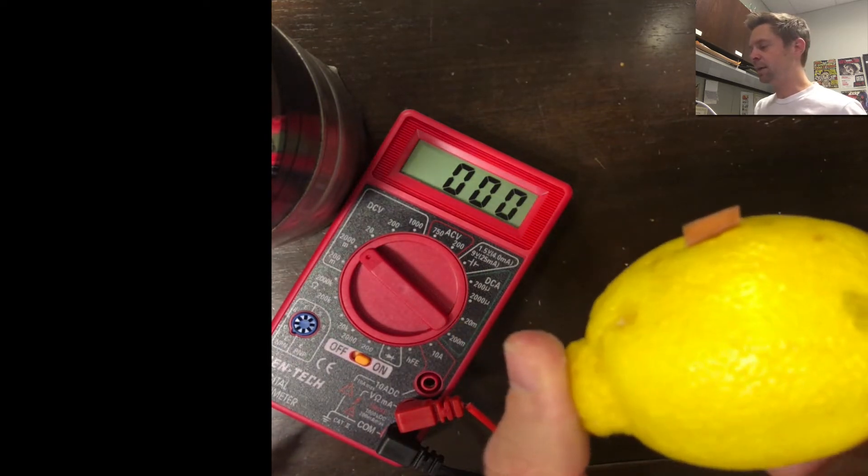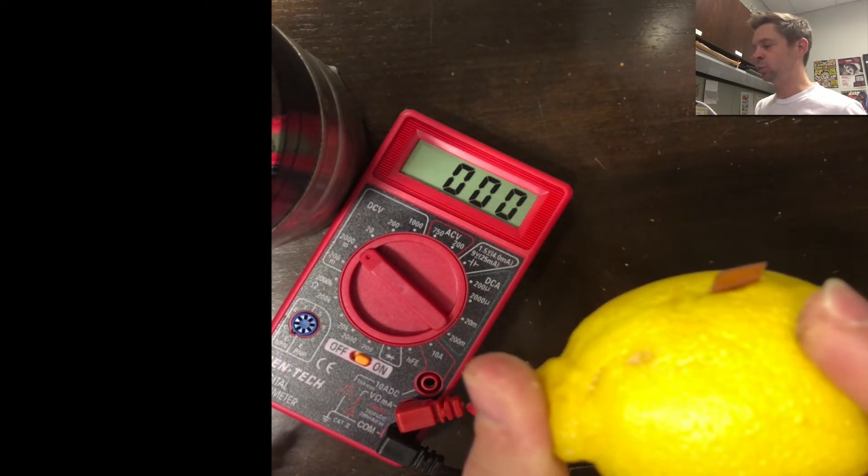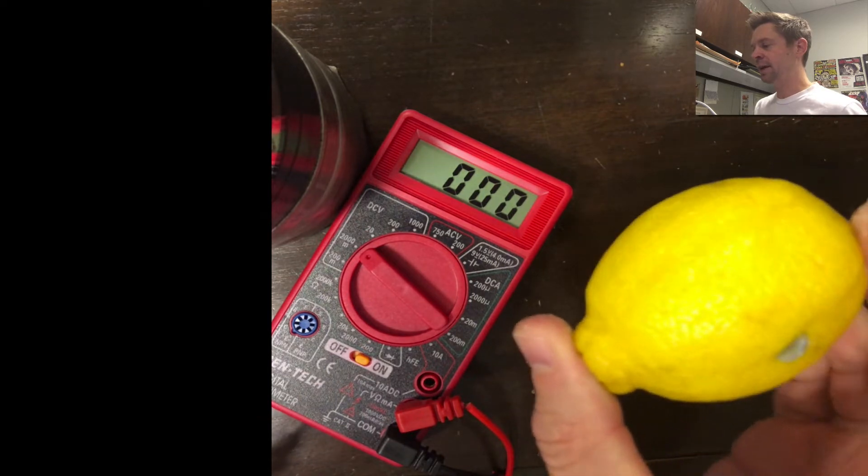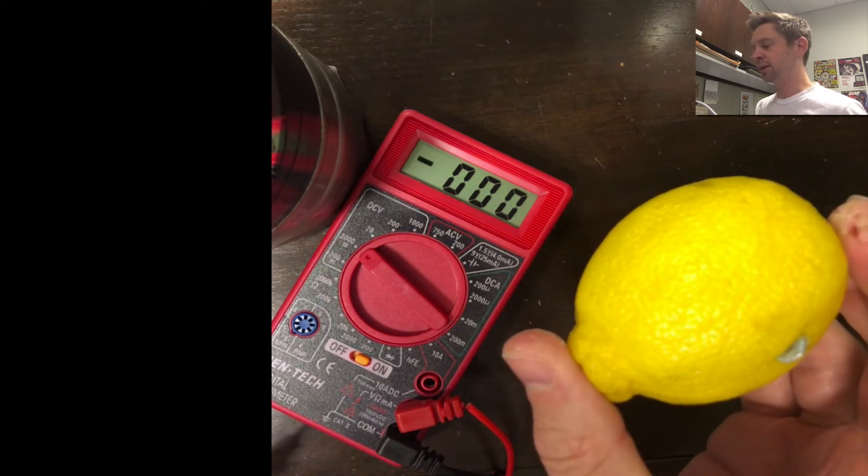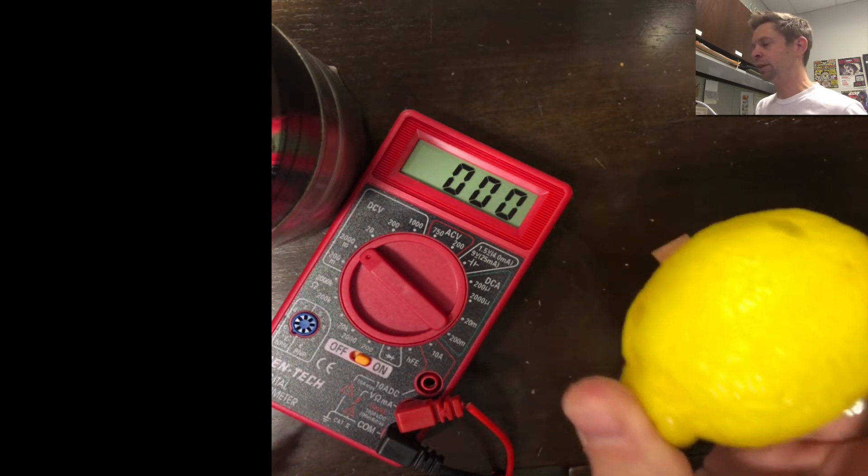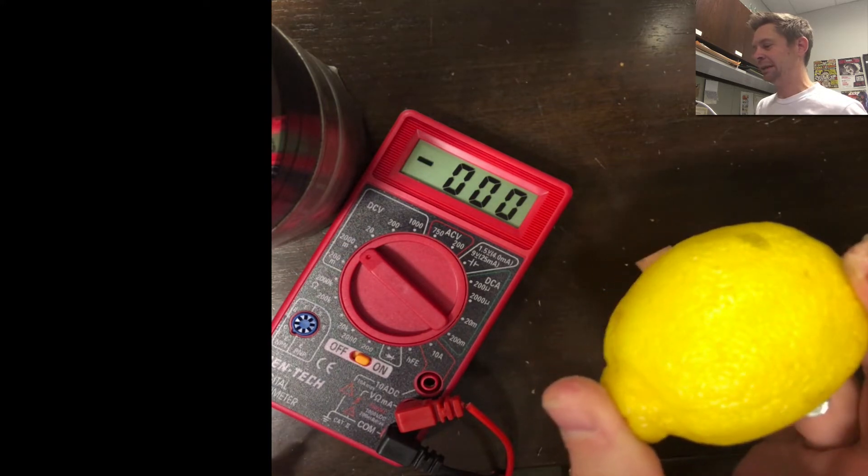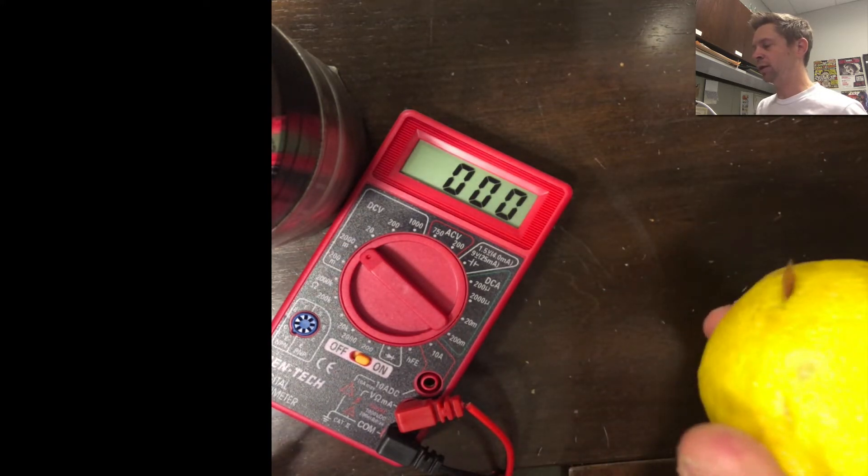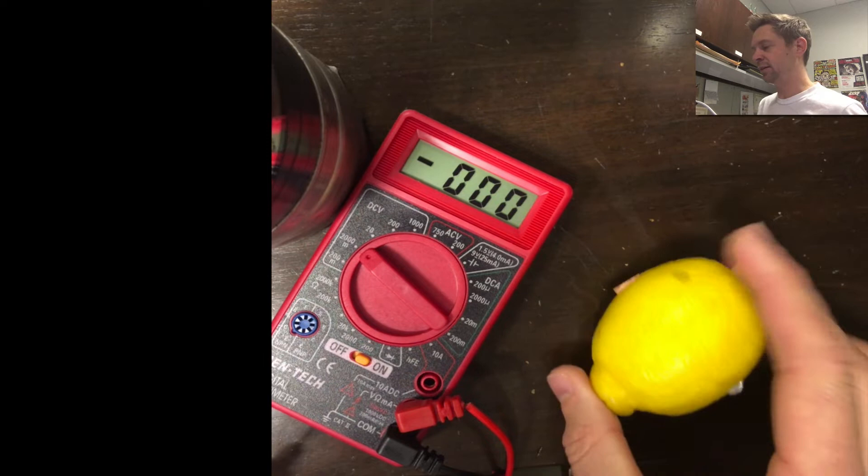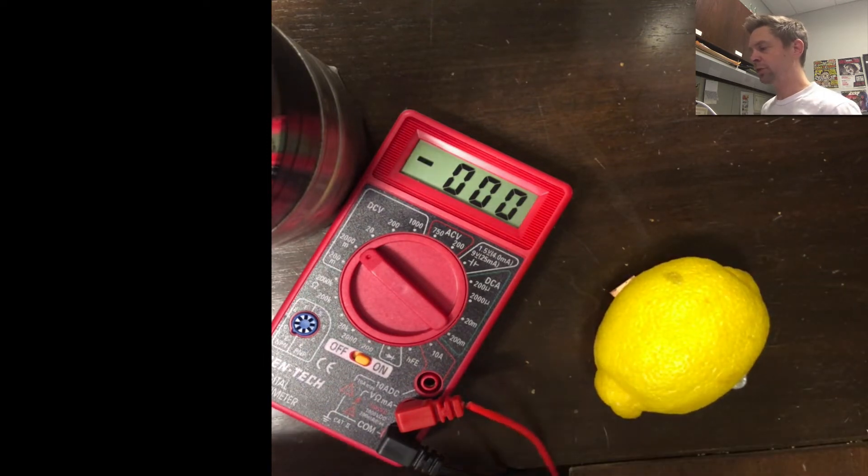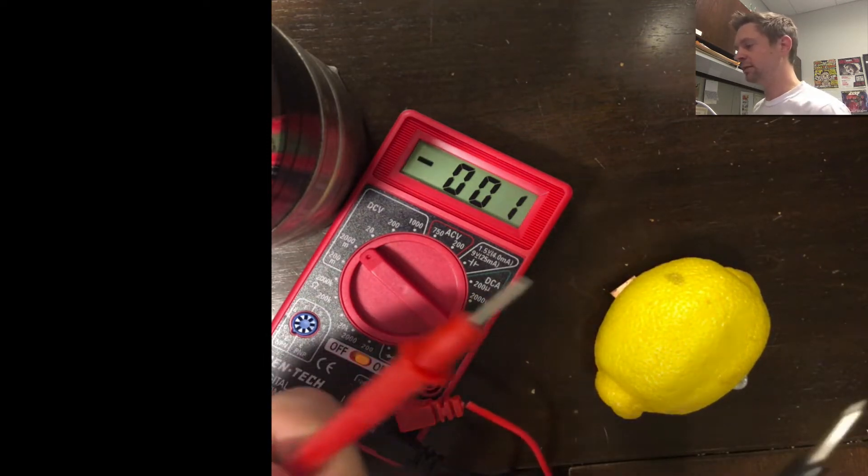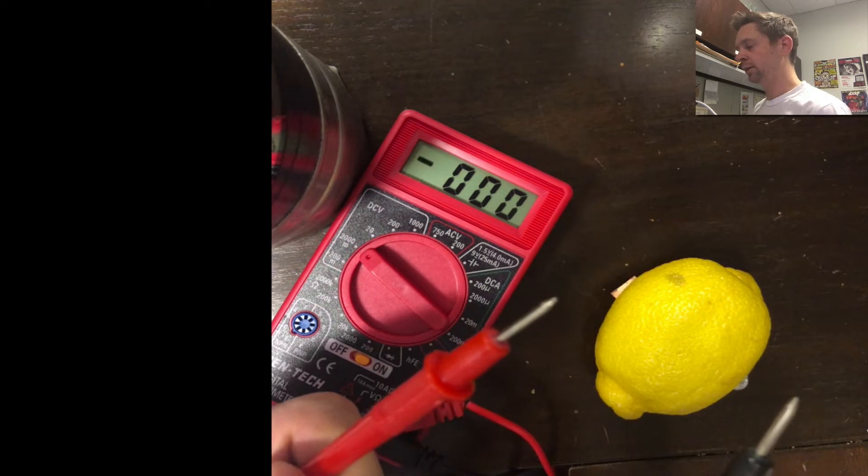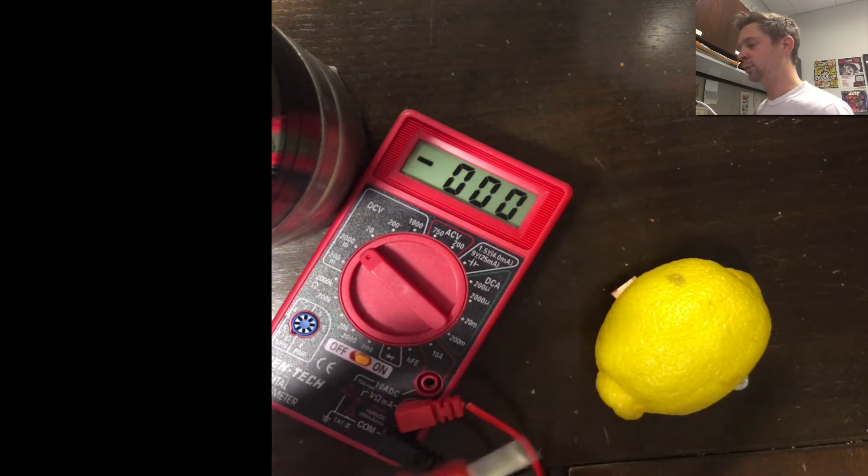So I've got a piece of copper metal stuck into one side of the lemon right here and a piece of zinc metal stuck into the other side, and I've squeezed it a little bit to get some of that lemon juice out and flowing around the copper and zinc metal. And what I'm going to do is connect these voltmeter leads to the copper and zinc and we're going to see what happens.